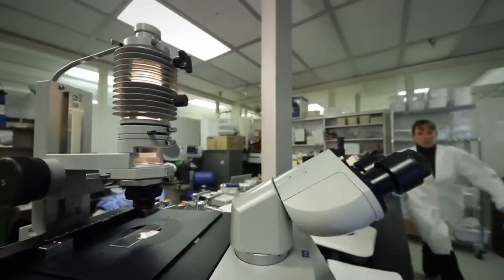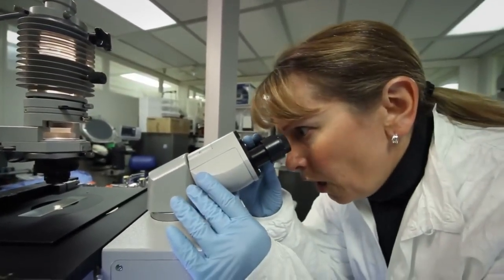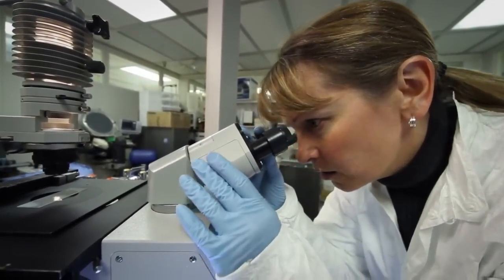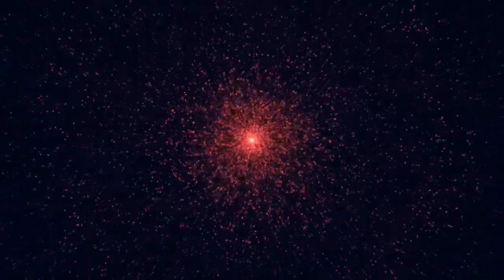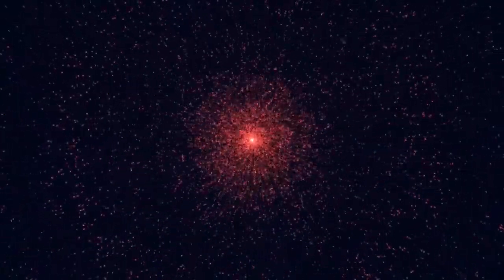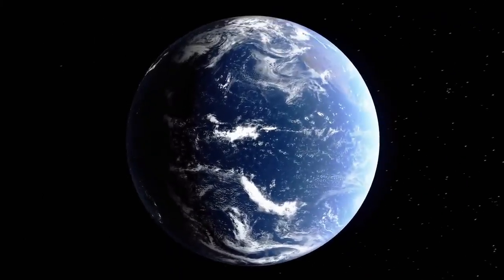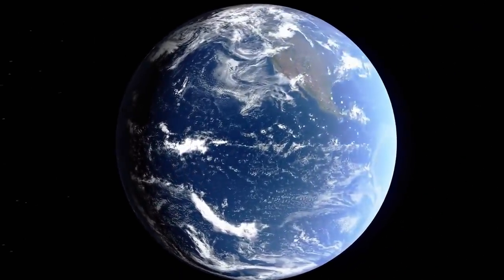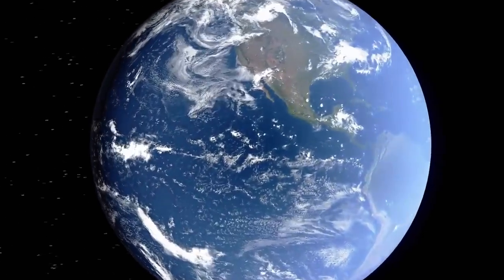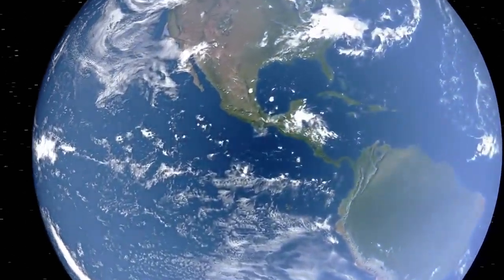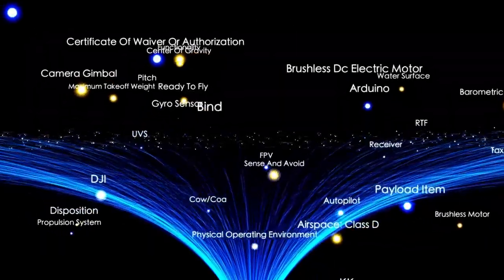Fortunately, Betelgeuse is far enough from Earth that even a powerful supernova wouldn't pose a threat to our planet. But if such an event were to happen closer to home, the results could be devastating. Gamma-ray bursts, sometimes linked with certain supernovae, could strip away Earth's ozone layer, leading to harmful levels of ultraviolet radiation. This could endanger human health, disrupt ecosystems, and negatively impact agriculture. Additionally, the electromagnetic pulse from a nearby explosion could interfere with satellites and electronic systems.